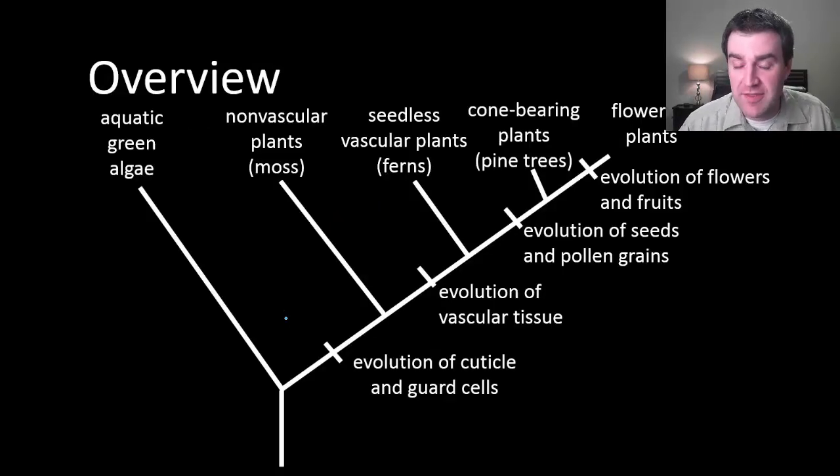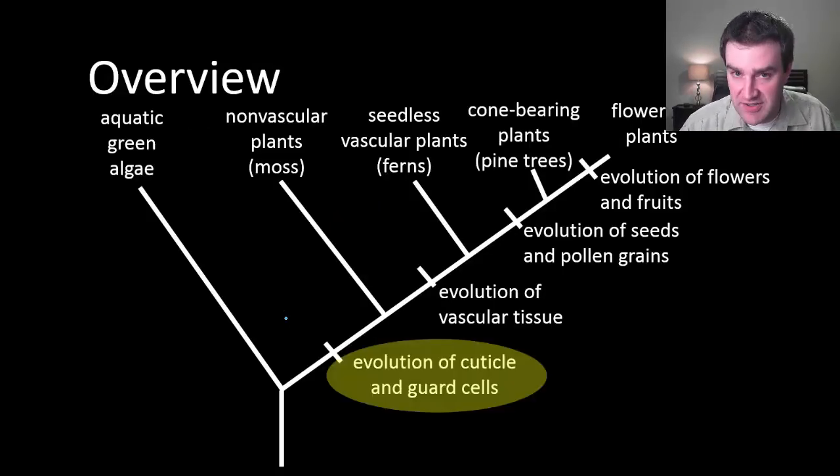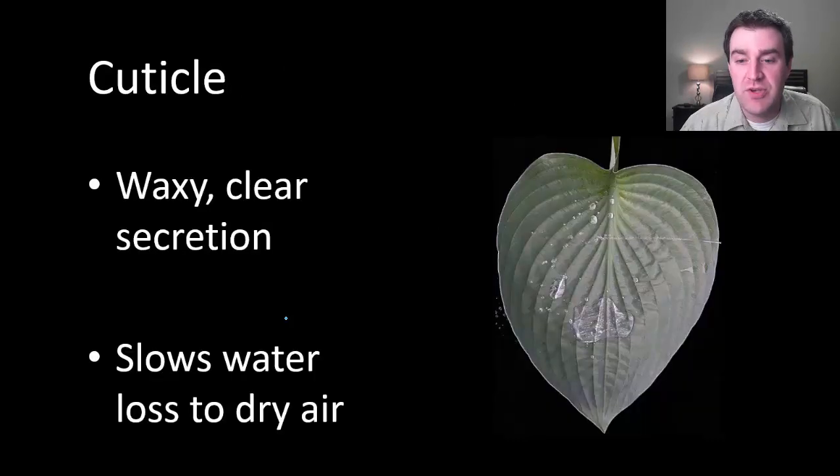Let's start by thinking about the cuticle and the guard cells of plants. Cuticle is really their solution to the speed of water loss out of their bodies. Cuticle is basically a secretion or a substance that the outer cells release onto the outside of the plant, and for our purposes the cuticle is a waxy or fatty substance and it's also clear. Maybe we can discuss clear first.